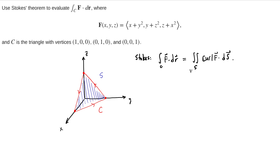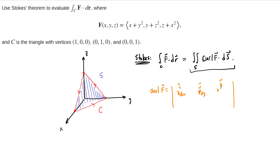Now, if we're going to do it this way, the first thing we should do is compute the curl, because the curl could end up being extremely nice and we might not have a whole lot of work to do. But if the curl has some components left over, then we need to think about how we're going to represent this surface as a parametric surface. So let's start with the curl. The curl of our vector field F is a formal cross product between the del operator and the components of the vector field.